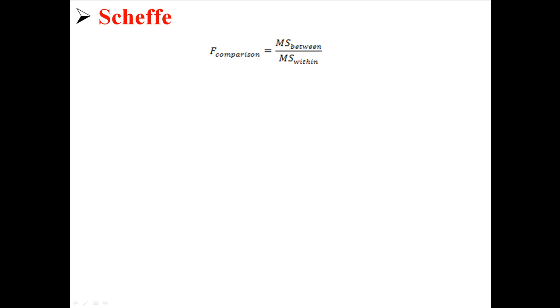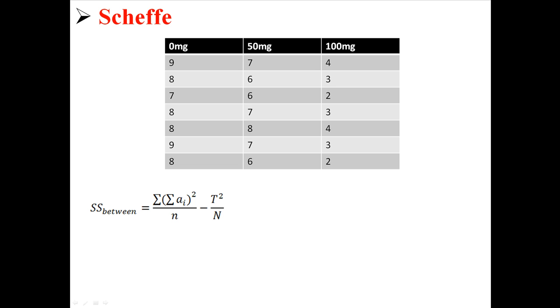Now next we have the Scheffe test, where we're going to calculate an F statistic just like the ANOVA from MS between divided by MS within. Now the MS within is going to be the same thing as in the ANOVA, it's going to be 0.57, but the MS between is going to be a little bit different.